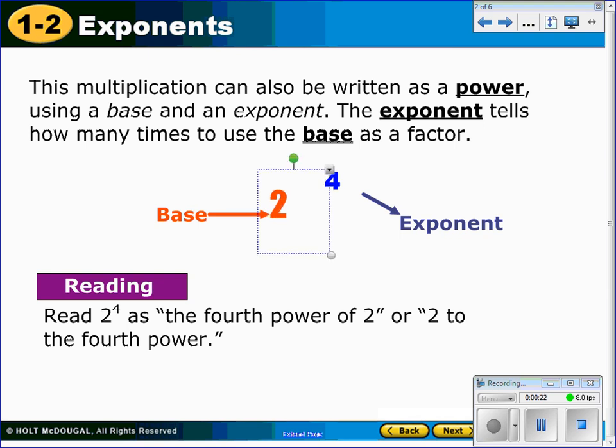So this is written as 2 to the fourth power, and we say it as 2 to the fourth power, or if this would be a 5, it'd be 2 to the fifth power. 2 is going to be our base number, and 4 is going to be our exponent. Okay, so it's important to know a little bit of the vocab there.